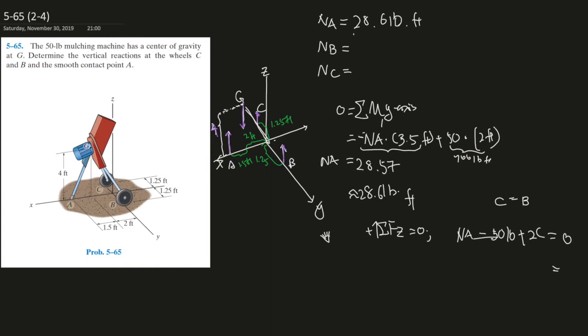Minus NA, that actually gives you, so 50 minus NA, 50 minus 28, that should give you 2C equals 21.43. C, in that case, should give you 10.7.